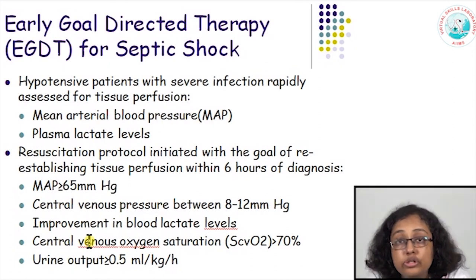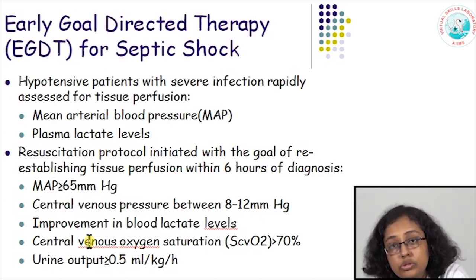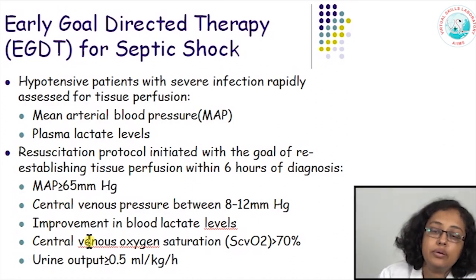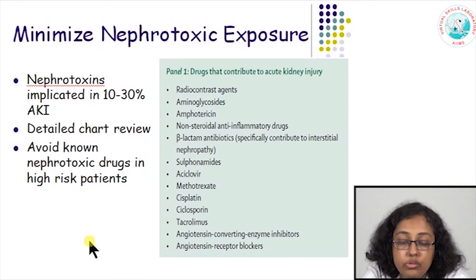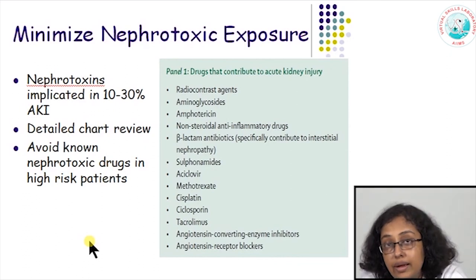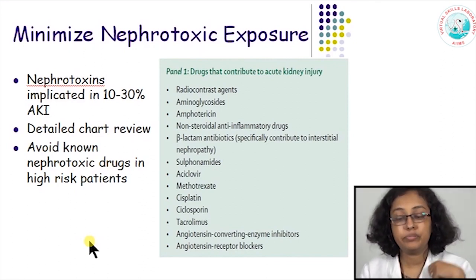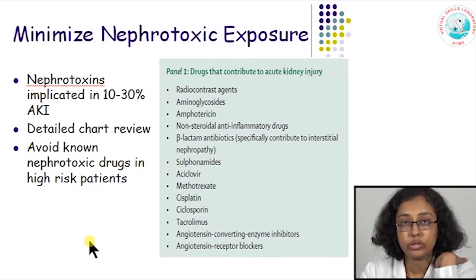The goals are: MAP raised to at least 65 mmHg, CVP maintained between 8 to 12 cmH2O, blood lactate levels corrected, central venous oxygen saturation more than 70 percent, and urine output restored to at least 0.5 ml/kg/hour. Nephrotoxic exposures should be checked in hospitalized patients via detailed chart review, and if a patient is at high risk, certain antibiotics and painkillers should be avoided. Special caution should be taken with radio contrast agents, aminoglycosides, antifungals like amphotericin, NSAIDs, certain beta-lactams, acyclovir, chemotherapy, ACE inhibitors, and immunosuppressive drugs like cyclosporine and tacrolimus.